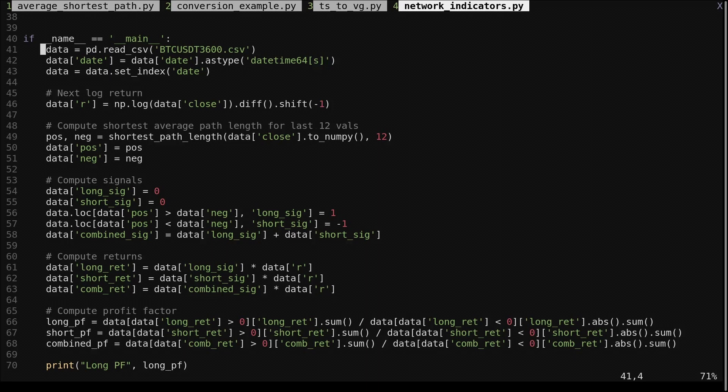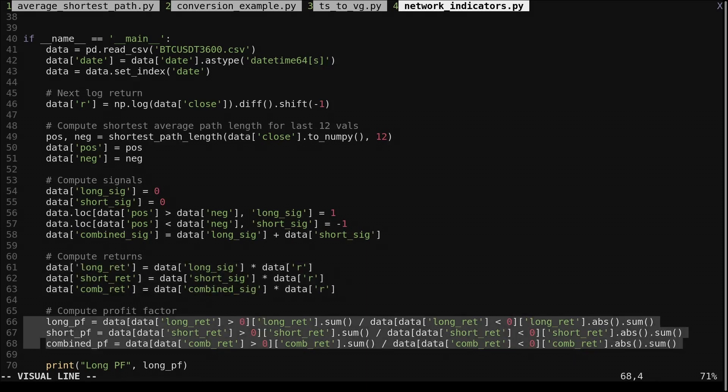Here is the code for this. We load in our data, compute the next log return, compute our indicator, then create the signals. I made one for long, short, and both combined. We multiply our signals by the next log return, then we compute the profit factors.